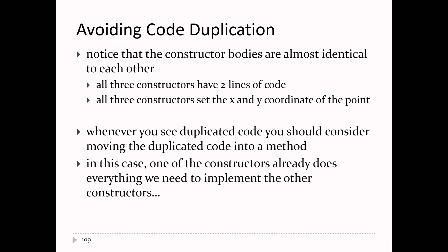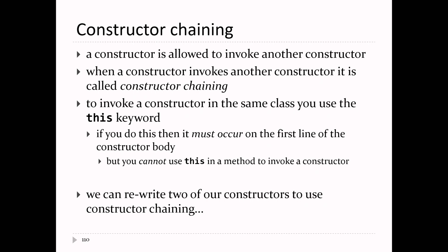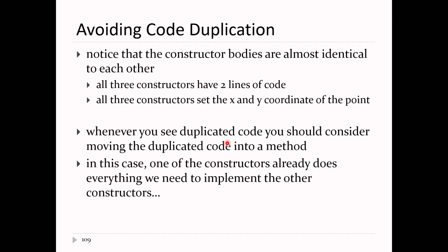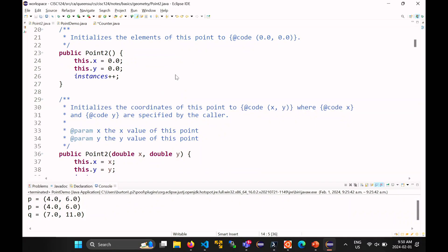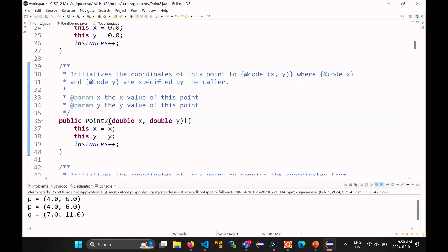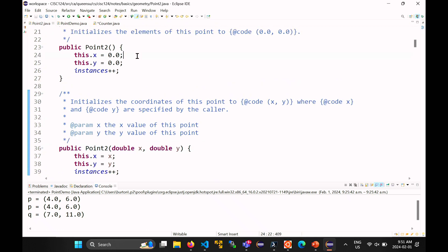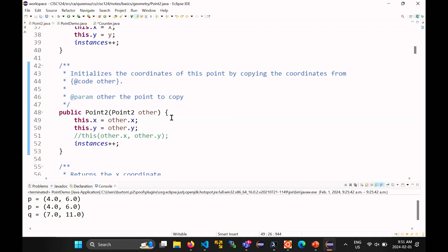Whenever you see duplicated code in a program, you should consider moving it into a method or something common that you can call. In our situation, the second constructor does everything we need — it lets us set the coordinates to any specified x and y. It's the most general constructor we have. If there were a way to reuse it from the no-arg constructor and the copy constructor, that solves the code duplication problem. Java has a mechanism for exactly that, called constructor chaining.